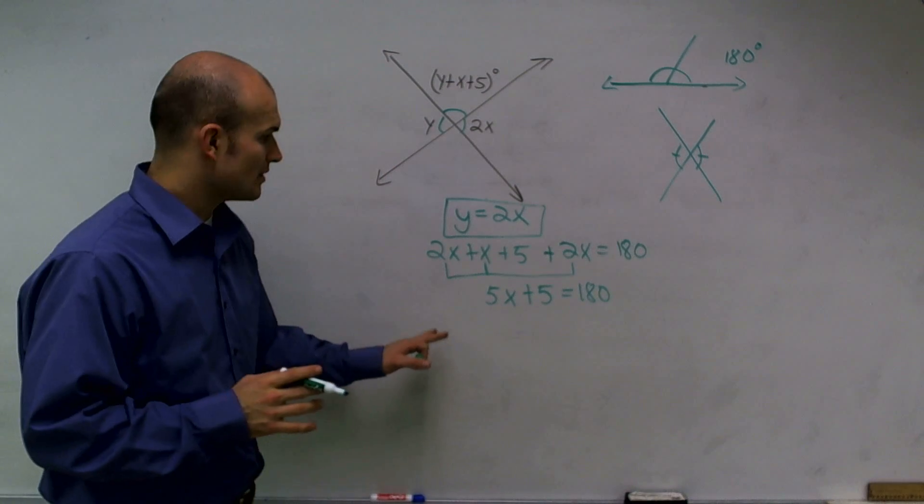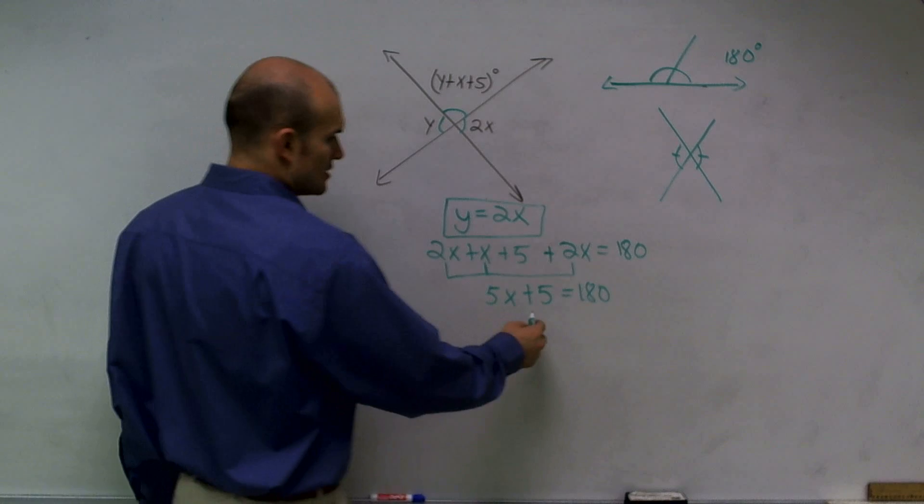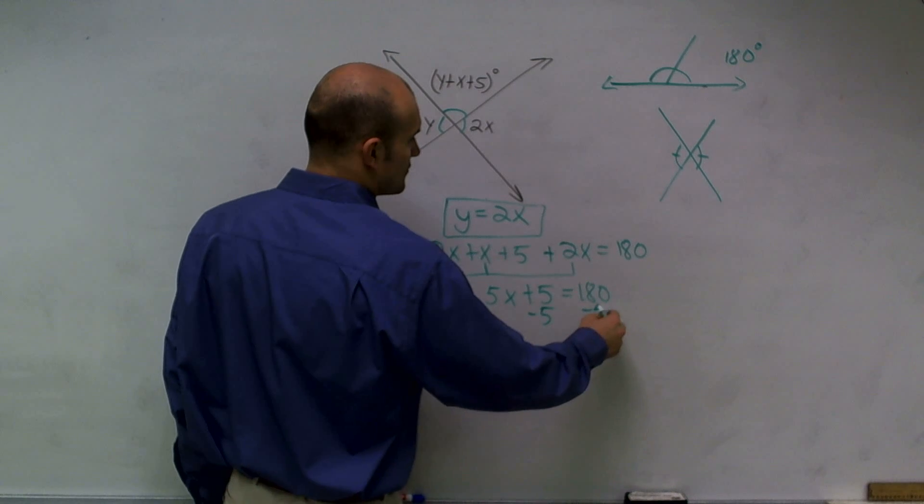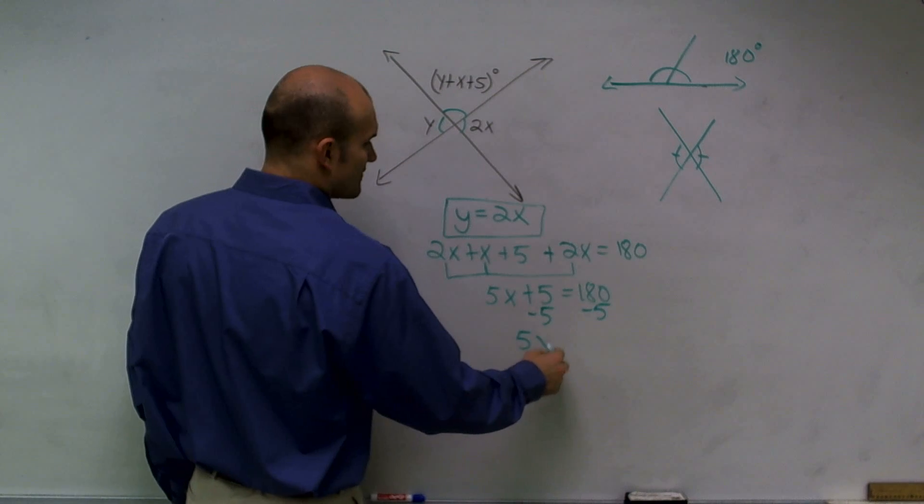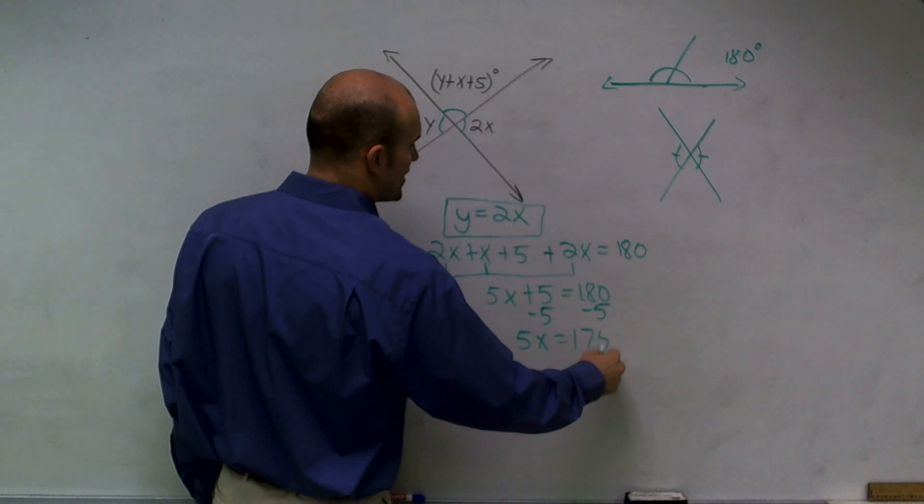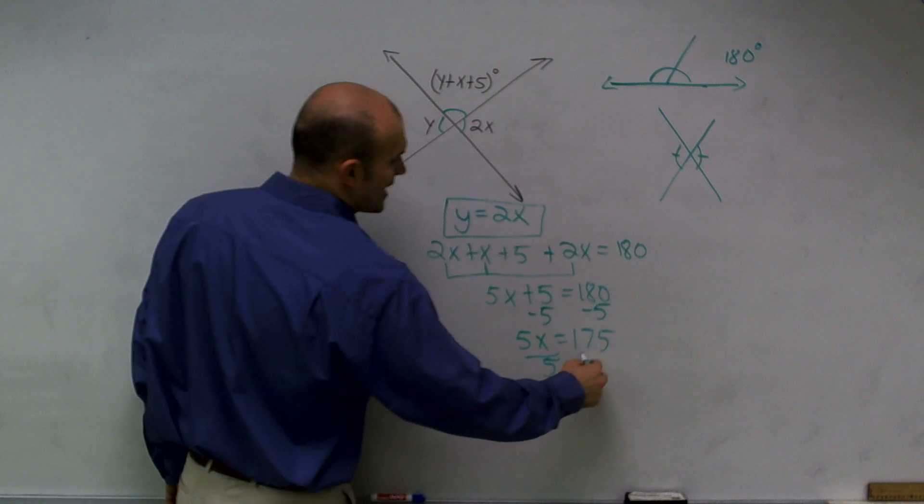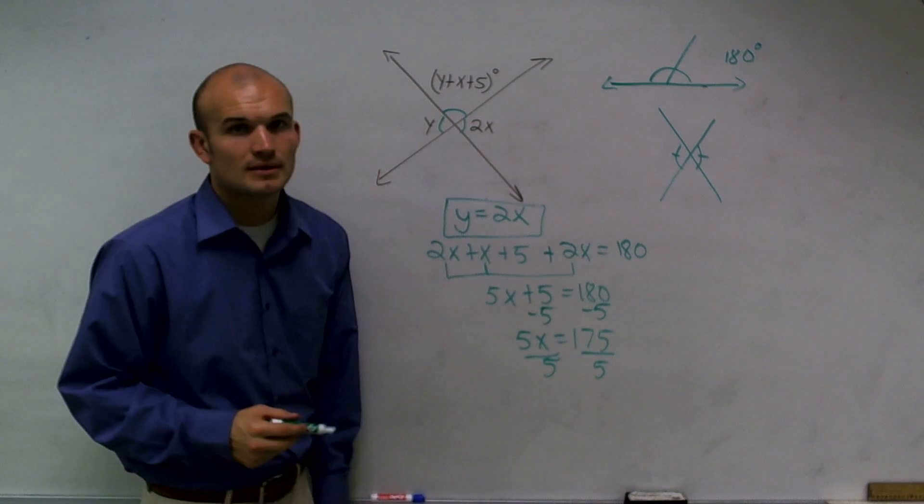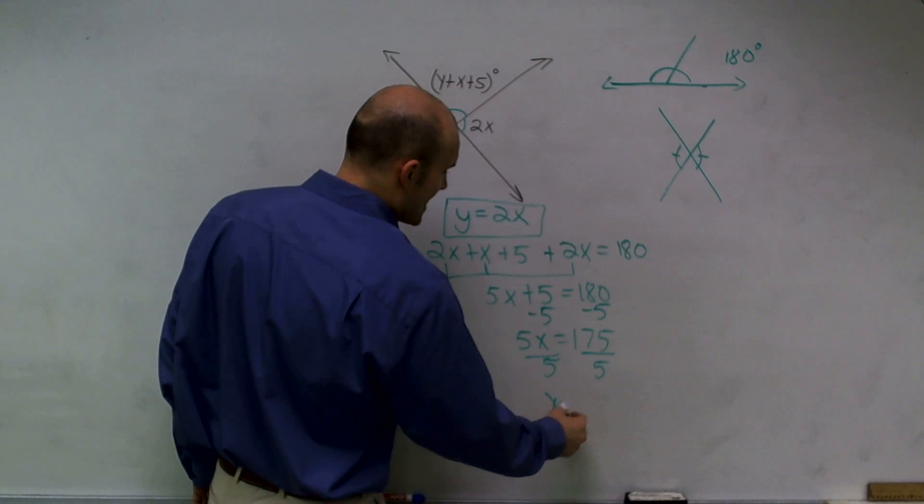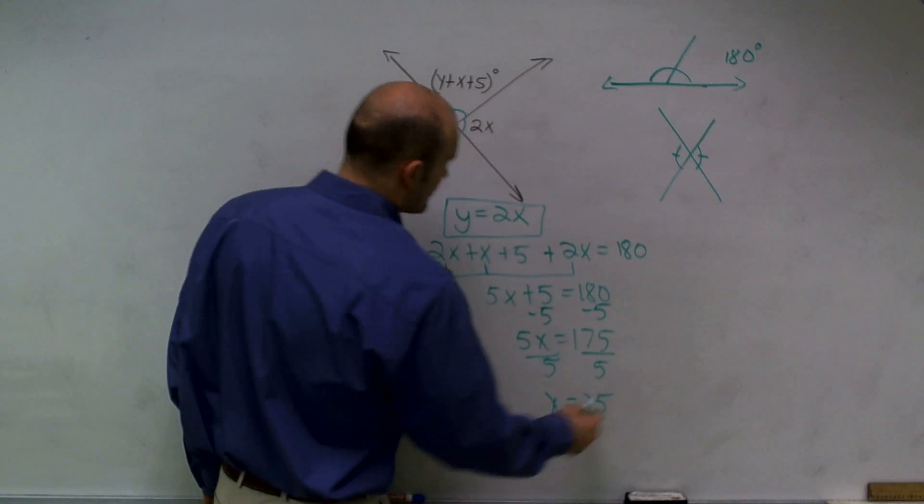Then my last step, I just need to solve for x. I subtract 5 from both sides and get 5x equals 175, divide by 5 on both sides, and I obtain x equals 35.